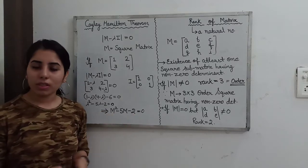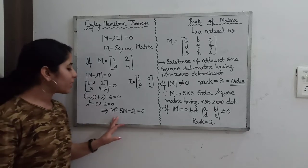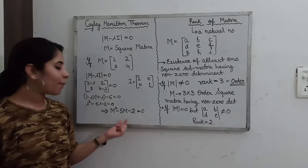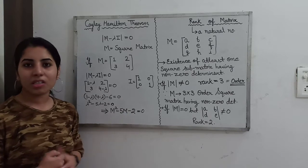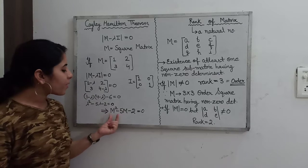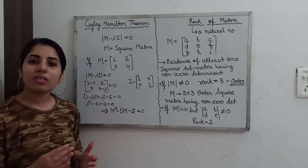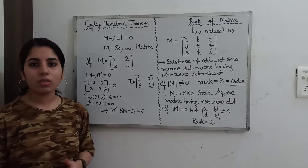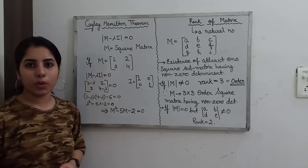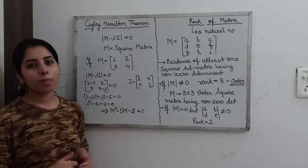With the help of this theorem, you will easily be able to find the inverse matrix. If you multiply this equation with M inverse, you will get a term containing M inverse, and M inverse times M will become the identity matrix. So you will get M minus 5I equals 2M inverse. By rearranging the terms, you will easily be able to get the value of M inverse — that is, the inverse matrix for this particular matrix M.